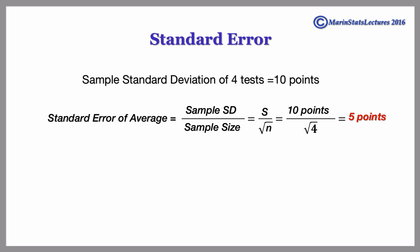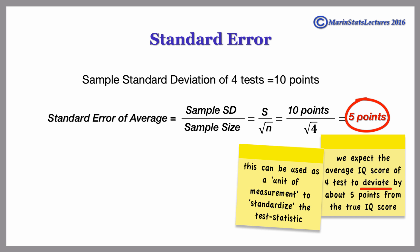Recall that this has the following interpretation. Typically, we'd expect his average IQ score on four tests to deviate by about 5 points from his true IQ. We can use this as a unit of measurement to standardize our test statistic.